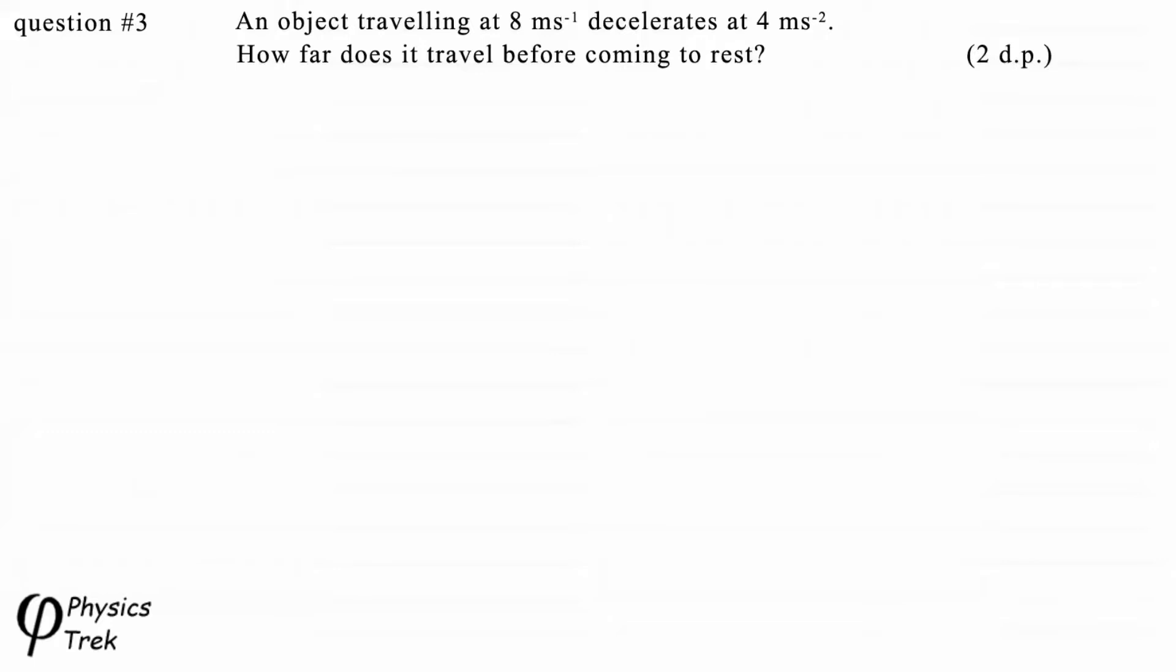Answer to two decimal places. So here are the equations of motion and their quantities in blue down the side for quick reference. And writing out the information given in the question in simple form, we have U is equal to 8 metres per second, A is equal to minus 4 metres per second per second.